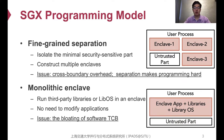Another favored programming model is deploying all the needed third-party libraries or the library OS in an enclave. Then, unmodified applications, including containers, can directly join an enclave. Yet, this programming model blows the TCB and may endanger the security code. For example, once a third-party library containing bugs is imported to the enclave, attackers may leverage the bugs to attack the enclave.